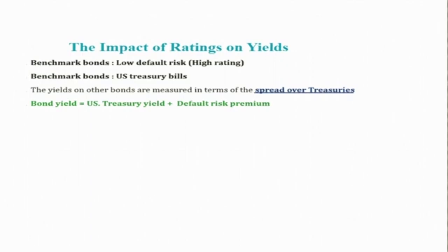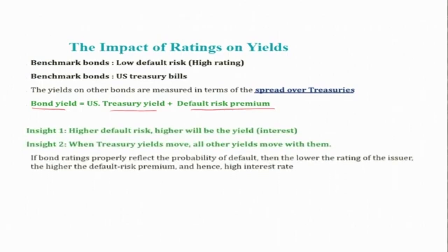We also started discussing what benchmark bonds are. Benchmark bonds are those bonds which have low default risk and receive high ratings. Globally, US Treasury bills are considered the benchmark bonds. The yield on other bonds is expressed as a spread over treasuries; for example, bond yield equals the US Treasury yield plus the default risk premium. From this we can derive two major insights: insight number one is that higher default risk means higher yield.